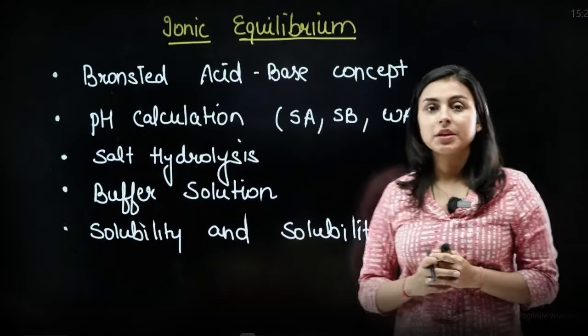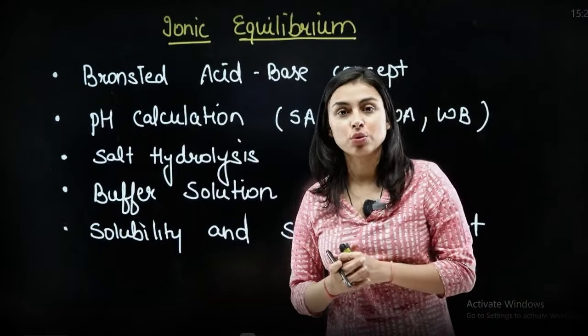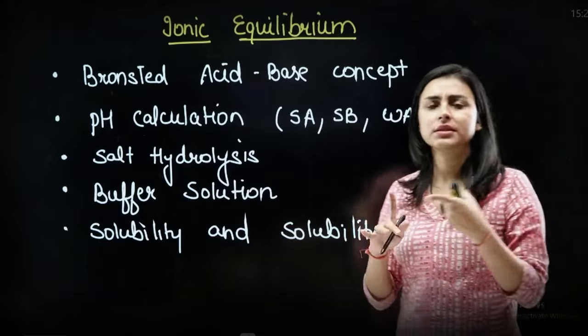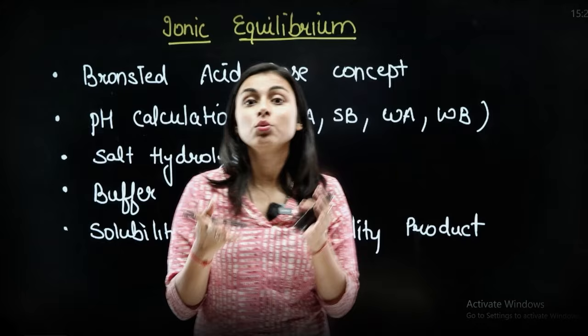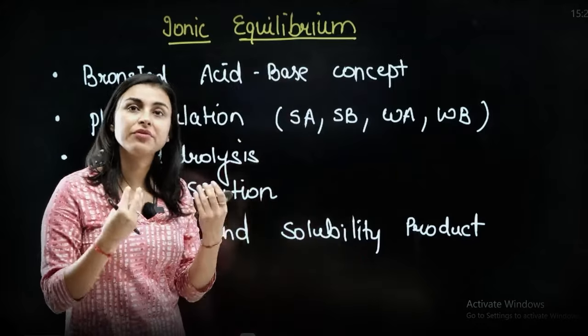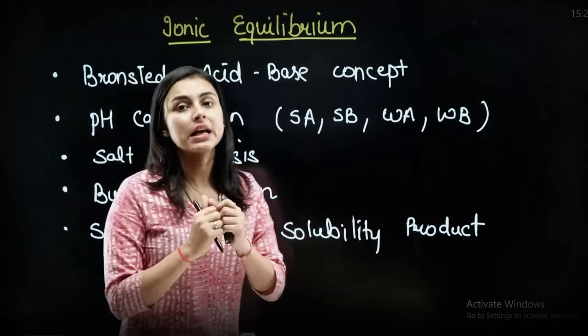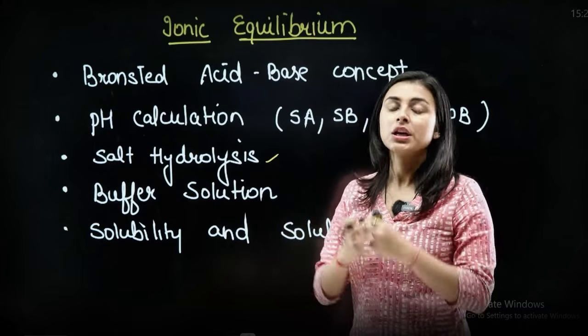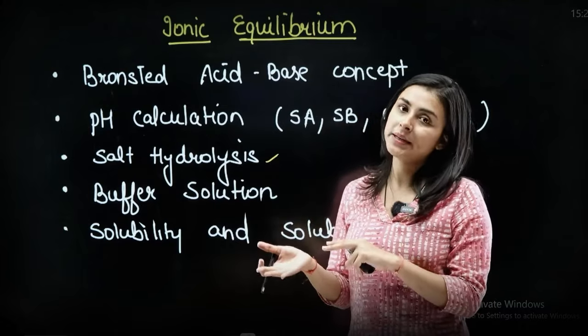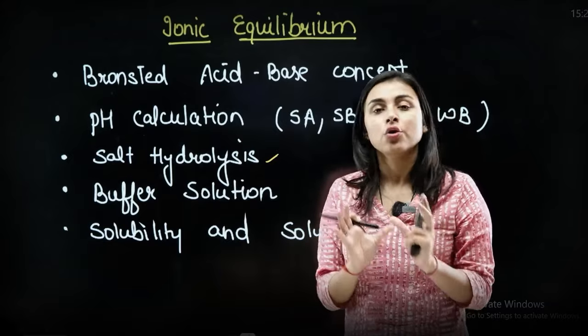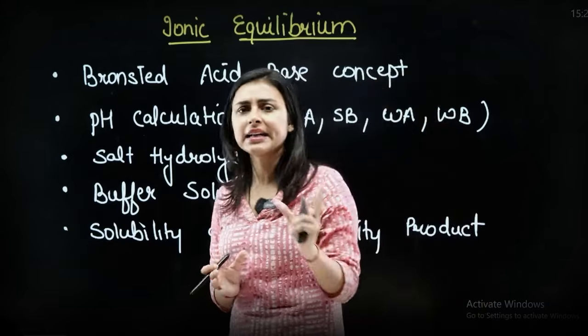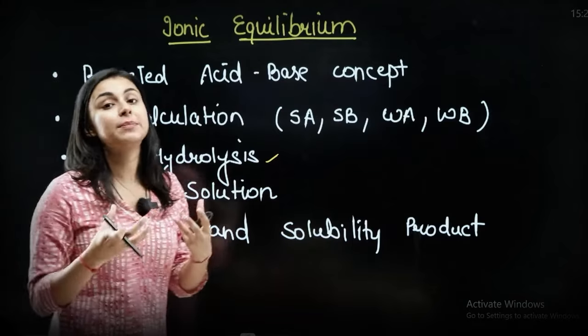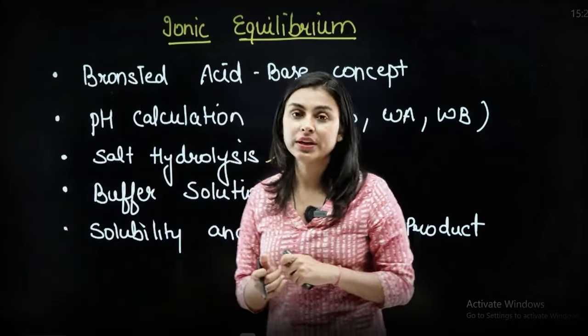Next, if we look at ionic equilibrium, the Bronsted acid-base concept is related to that question. From pH calculation, strong acid, strong base, weak acid, weak base. In fact, there is more possibility of weak acid and weak base. Next, if we look at salt hydrolysis, buffer solution, solubility and solubility products. These are the basic questions that come from you. Direct, it's not very complicated. Formula-based questions come. But then again, you need to clear the concept.